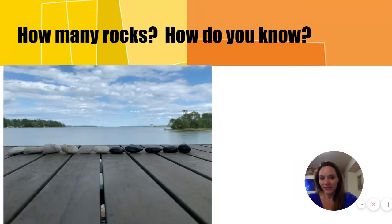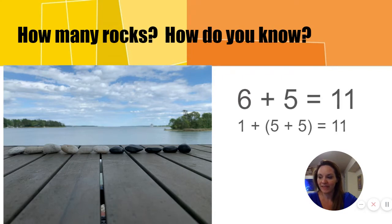How many rocks? How did you know? There are eleven rocks. We know that five white rocks and five black rocks make ten rocks, and now there is one more white rock. Think five and five is ten, and one more makes eleven. One plus five plus five equals eleven.